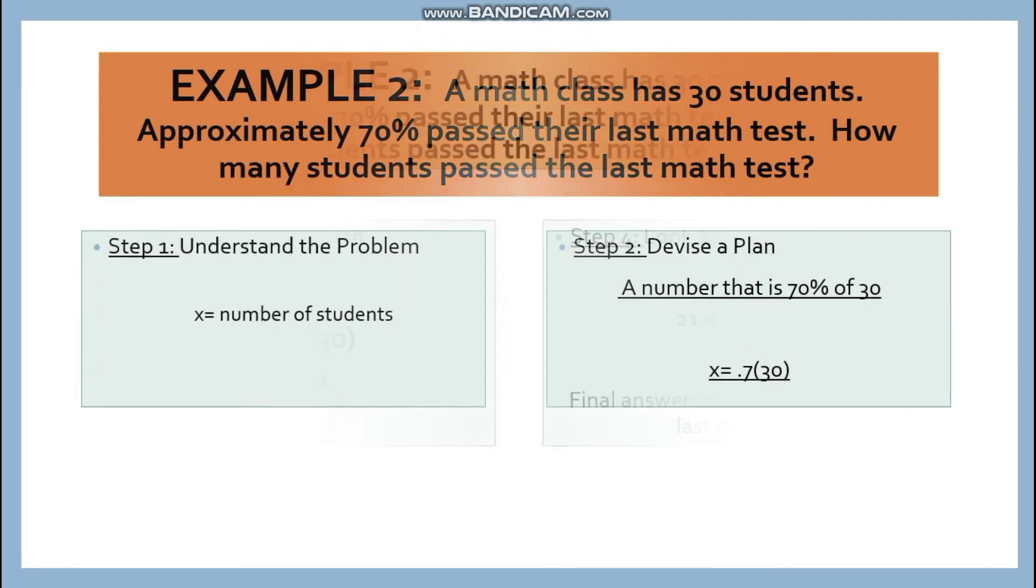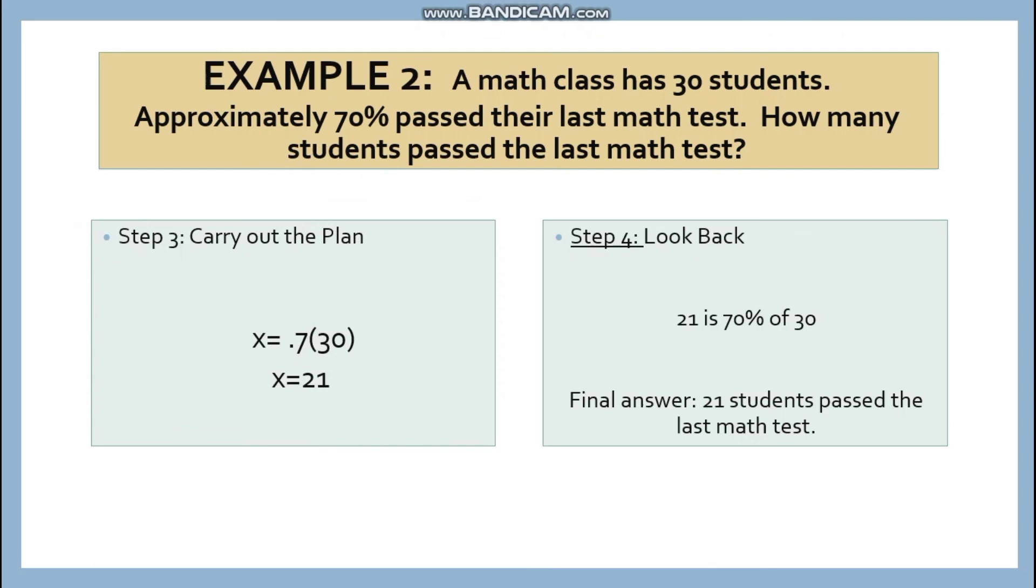Step 3, carry out the plan. X is 0.7 times 30. That is 21. Let's go to step 4, look back, check, and verify. 21 is 70% of 30. Let's see, 21 over 30. The answer is 0.7. 21 is correct. And the final answer is 21 students passed the last math test.